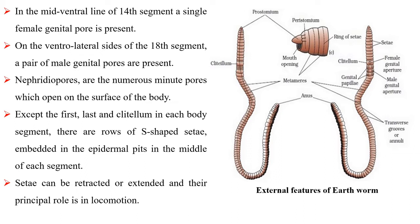Except the first, last and clitellum, in each body segment there are rows of S-shaped setae embedded in the epidermal pits in the middle of each segment. Setae can be retracted or extended and their principal role is in locomotion.